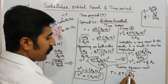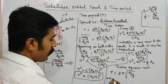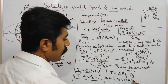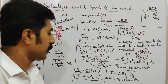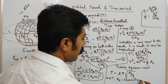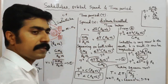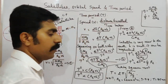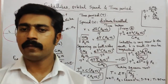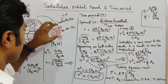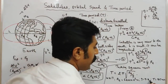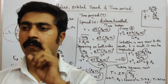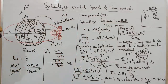Substituting the values: radius of the Earth Re = 6400 km = 6.4×10⁶ m, and g = 9.8 m/s². The time period of the satellite works out to nearly 85 minutes, which is 1 hour and 25 minutes. This is a very important question.